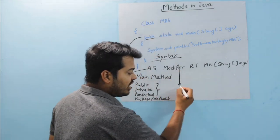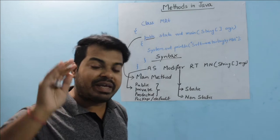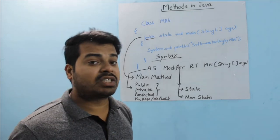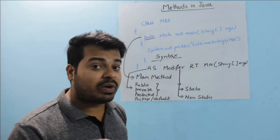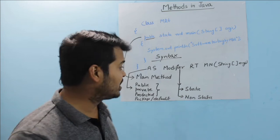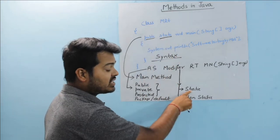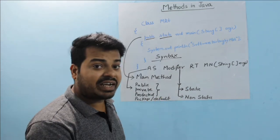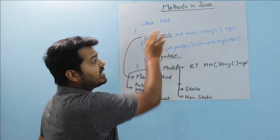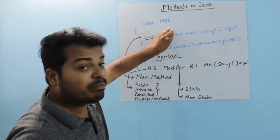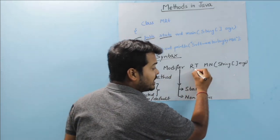For the modifier, we have two types: static and non-static. I'm going to make a separate video explaining static and non-static thoroughly. For now, just understand that the modifier can be either static or non-static. If it is static, you write the keyword 'static'. If it is non-static, you don't write any keyword — by default it is non-static.